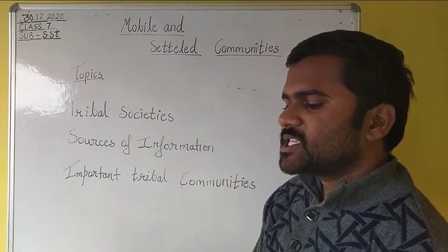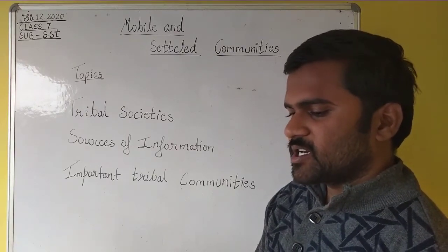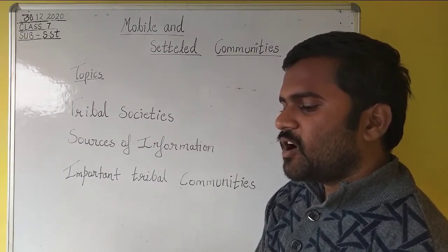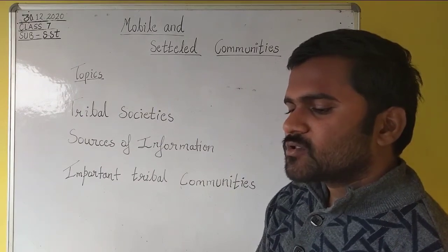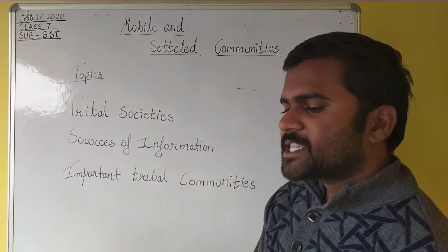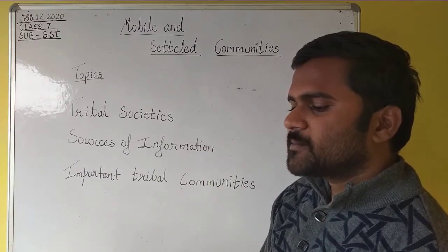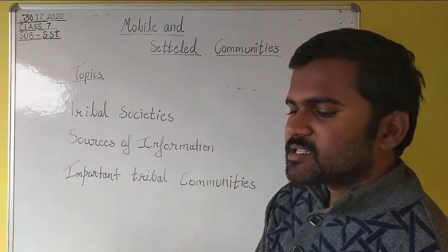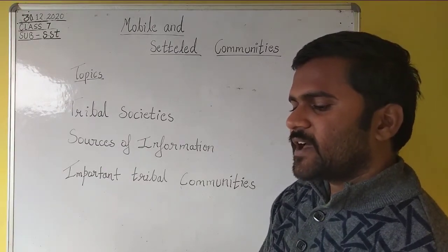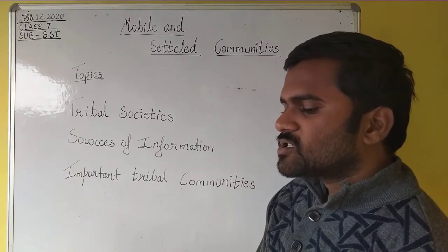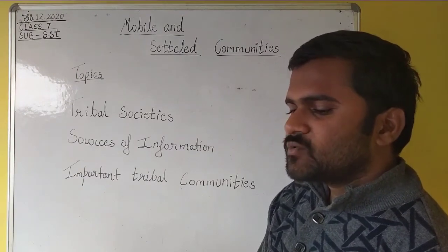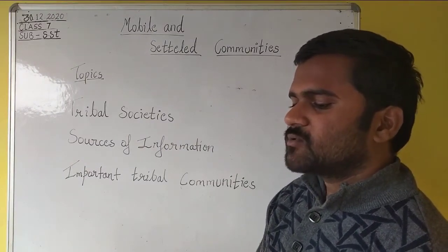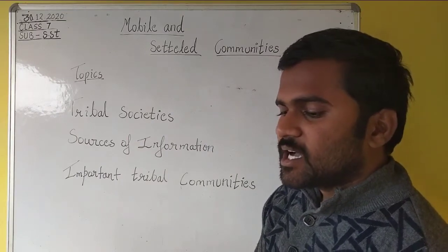Such occupations included weaver, goldsmith, carpenter, fisherman, and potter. Due to the influence of Muslim rulers and their soldiers, many people also adopted their customs and dress. Among Muslims too, there were caste distinctions. There were, however, other kinds of society as well — they neither followed the social rules and rituals described by Hindu and Muslim societies, nor were they divided into numerous unequal classes.